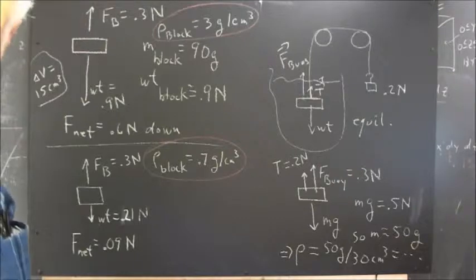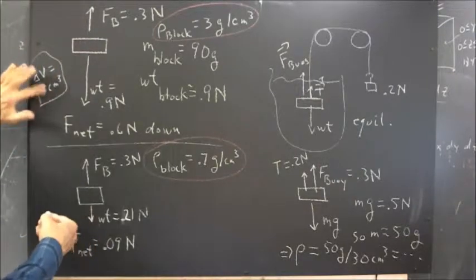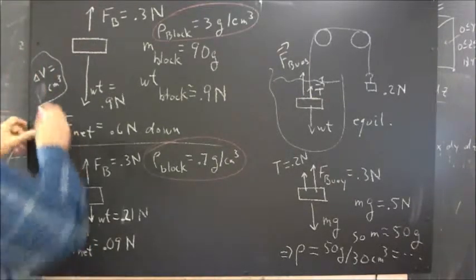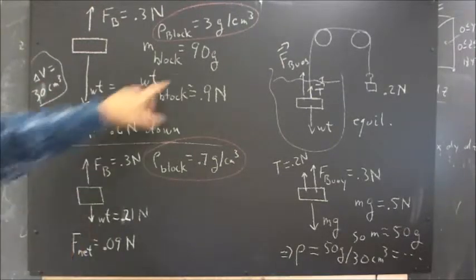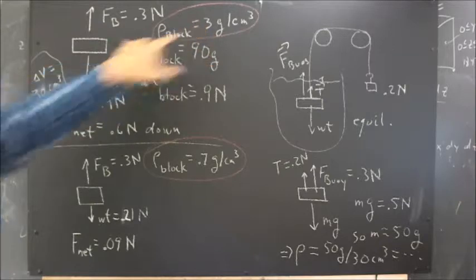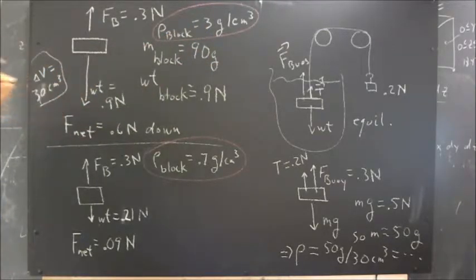And it's not 15 cubic centimeters, that's the area's 15 square centimeters, it's 30 cubic centimeters. The mass of the block, then, is 3 grams per cubic centimeter times 30 cubic centimeters, 90 grams, giving the block a weight of 0.9 newtons.